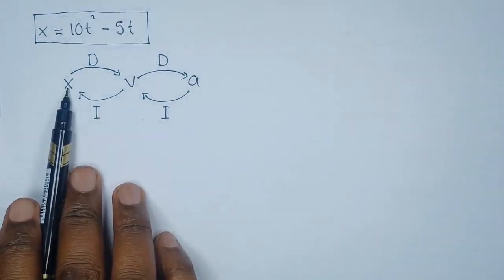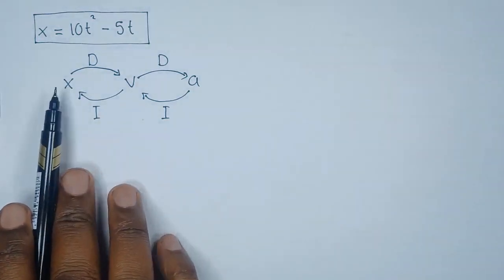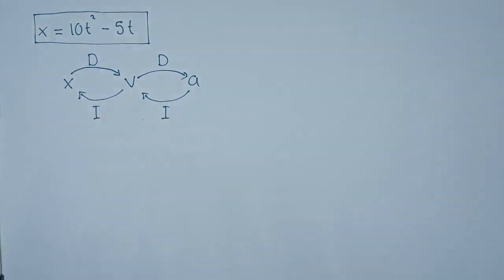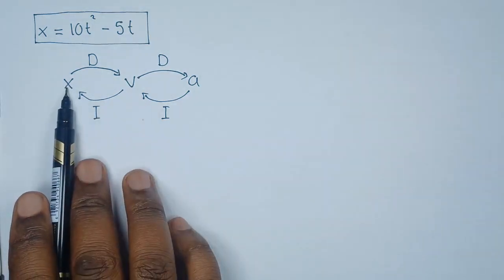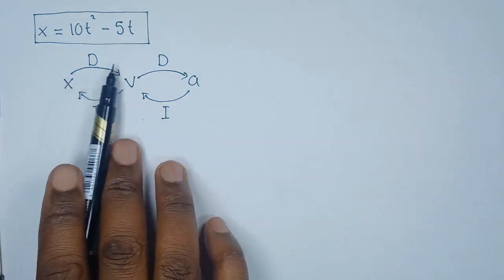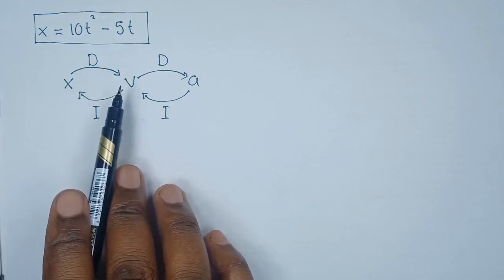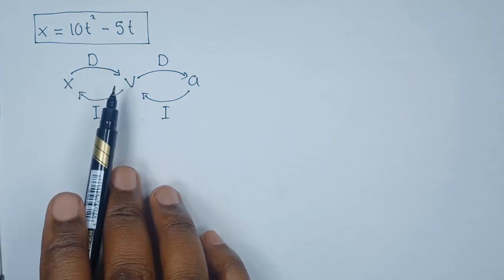The question is requiring us — question a — to find the initial velocity. Meaning that since we have been given x, we have to differentiate our function to find the velocity.